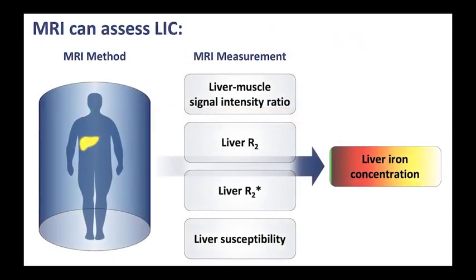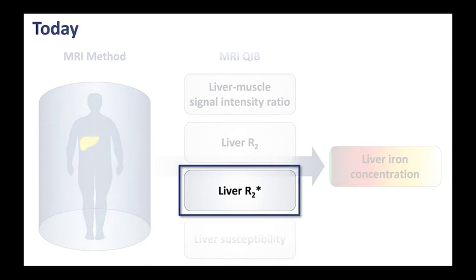MRI can assess the LIC through various methods, each of which is partnered with a different MRI measurement. These MRI measurements include the liver-muscle signal intensity ratio, the liver R2, the liver R2*, and the liver susceptibility. All of these can allow us to assess the LIC non-invasively. Today, I will focus only on liver R2*, which is emerging as the leading method for the evaluation of liver iron.